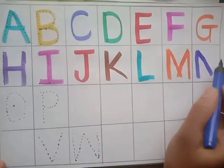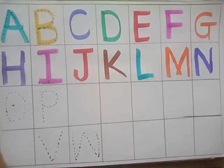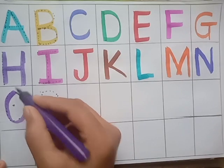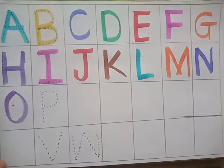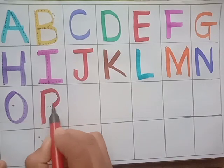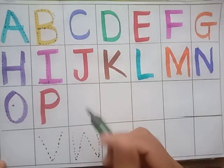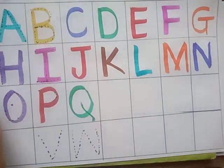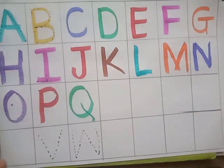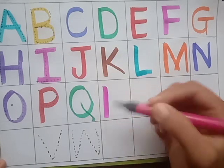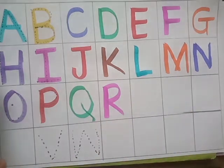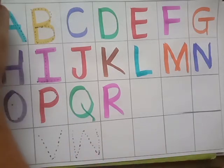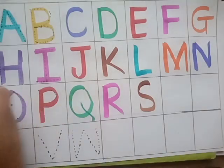N, N for nest. O, O for orange. P, P for pencil. Q, Q for queen. R, R for rabbit. S, S for sun.